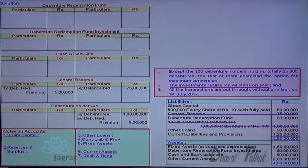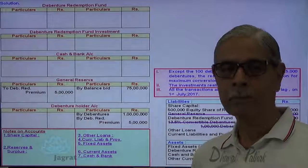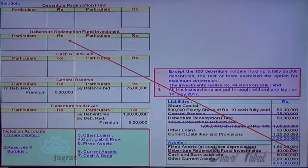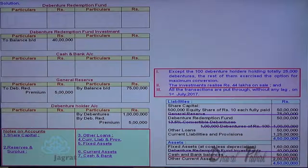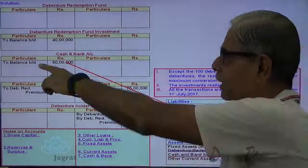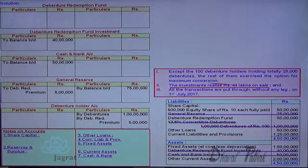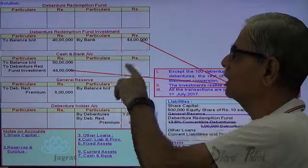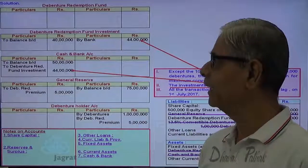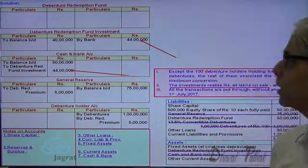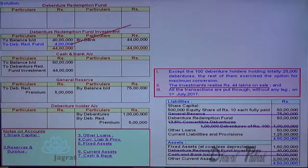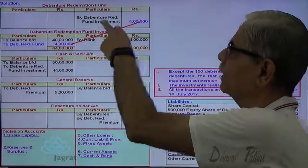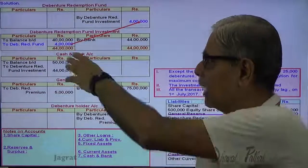Now for the purpose of making payment, we must have bank balance. The debenture redemption fund investment of 40 lakhs is sold for 44 lakhs. So cash and bank account is debited, and debenture redemption fund investment account is credited. Bank balance increases. The profit on sale of investment of 4 lakhs will be transferred to the debenture redemption fund. This is how the bank balance available is built up.